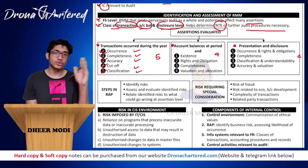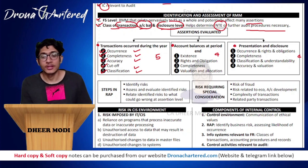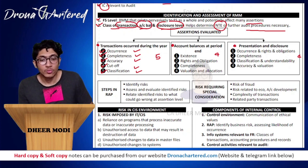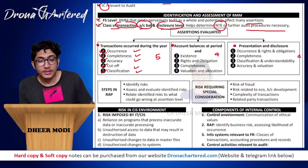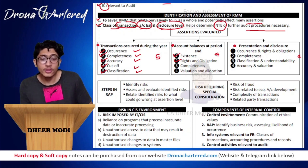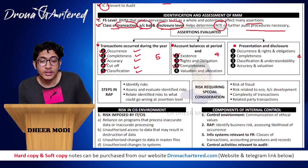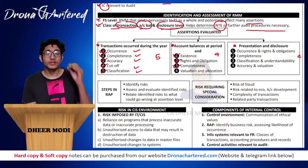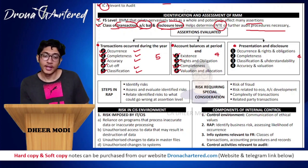Any transaction after the cutoff date should not be recorded. Then next is classification - the transaction should be classified appropriately. For account balances at the period end, the assertions are: existence - the account balance should actually exist; rights and obligations - any rights and obligations with regards to account balances; completeness - your account balances should be completely reflected; and evaluation and allocation.